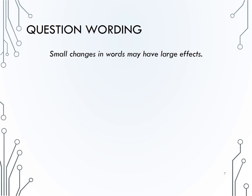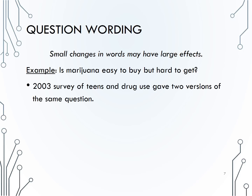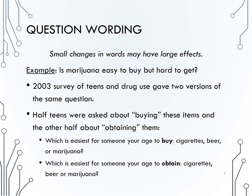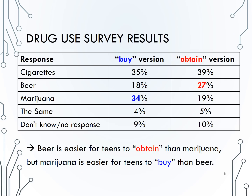Here is another example showing how question wording can have a big impact on results. In a 2003 survey of teens and drug use, teens were given two versions of the same question. Half were asked which is easiest for someone your age to buy — cigarettes, beer, or marijuana — while the other half was asked which is easiest to obtain. 34% said marijuana was easiest to buy, but only 19% said it was easiest to obtain. Conversely, 18% said beer was easiest to buy, while 27% said it was easiest to obtain.